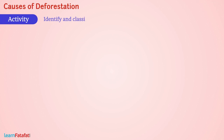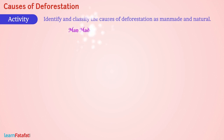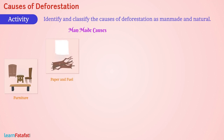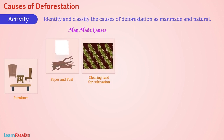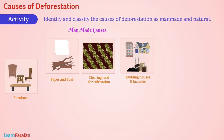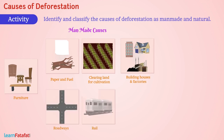Identify and classify the causes of deforestation as man-made and natural. Man-made causes include cutting of wood for furniture, paper and fuel, clearing land for cultivation, building houses and factories, and construction of roadways, railways and dams.